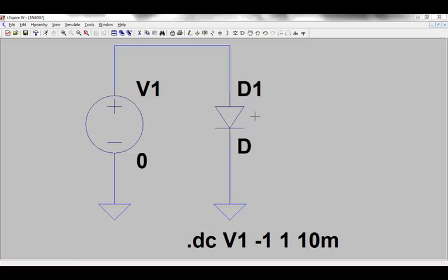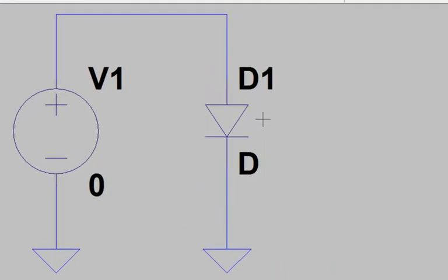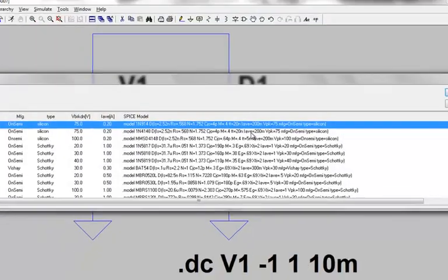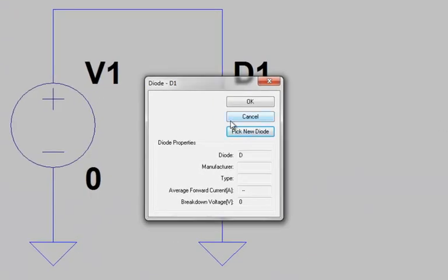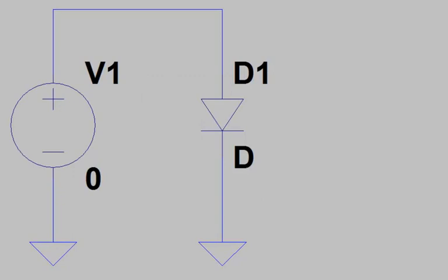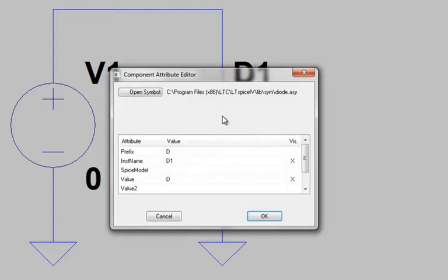The next step is to edit the component attributes. Normally, we would just right-click on the component symbol and select a diode model from the existing library in LTSpice. However, in this case, we want to incorporate a third-party model, and to do so, we're going to need to hold down the control key and then right-click on the component symbol to edit the component attributes.